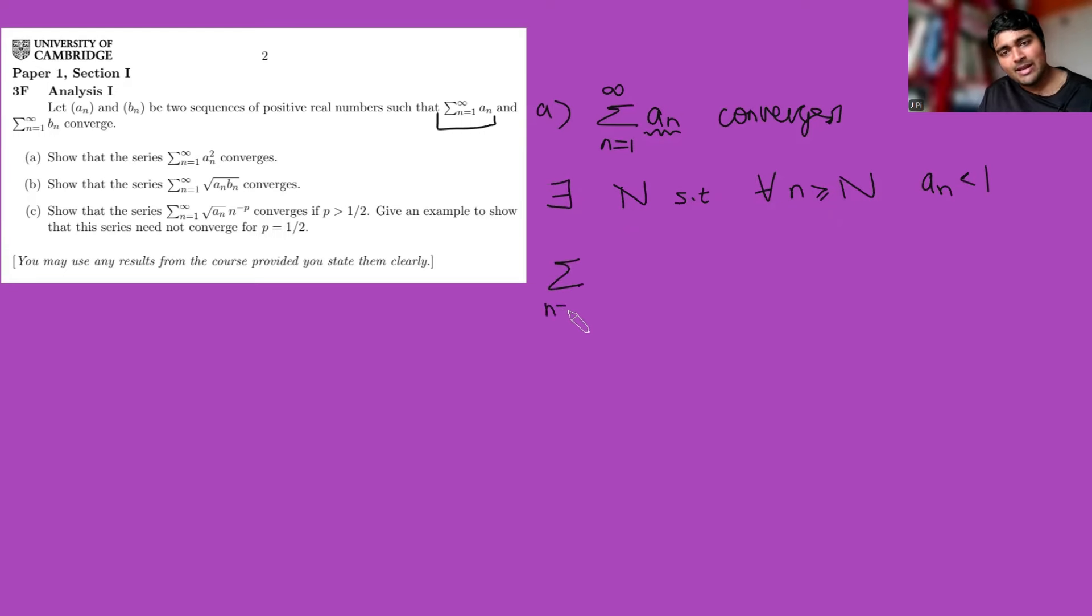Now, why is this relevant? Then we can say that the sum from k equals one to infinity of a_k squared is equal to the sum from k equals one to capital N minus one of a_k squared, plus the sum from k equals N to infinity of a_k squared. This guy here might be bigger than one. We don't know, we don't really care. It's a finite sum, so this is definitely going to be finite.